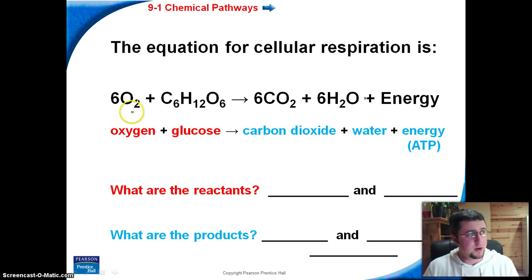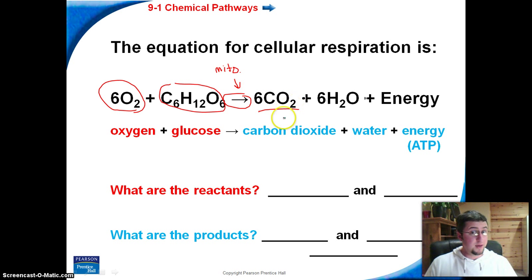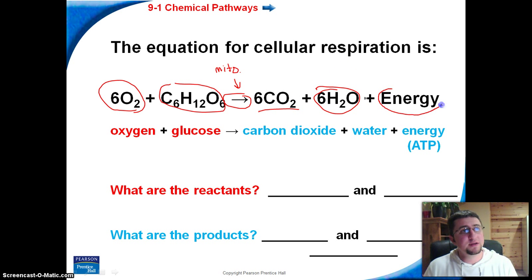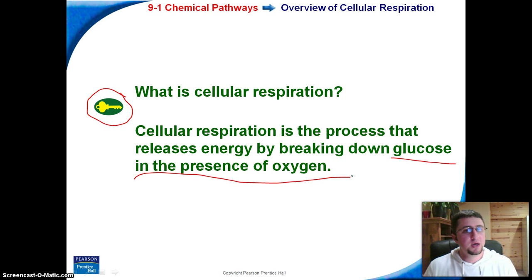Here's the equation for cellular respiration. We have six oxygens, which are going to react with one glucose molecule. Then there's going to be a series of reactions — most of those reactions are going to occur in the mitochondria. We're going to get some carbon dioxide — that's where the carbon dioxide comes from that we give off — we're going to get some water, and we're also going to get some energy in the form of ATP. One of the most important things to know about cellular respiration is that it's a process that breaks down glucose in the presence of oxygen. Without oxygen, cellular respiration would not happen.